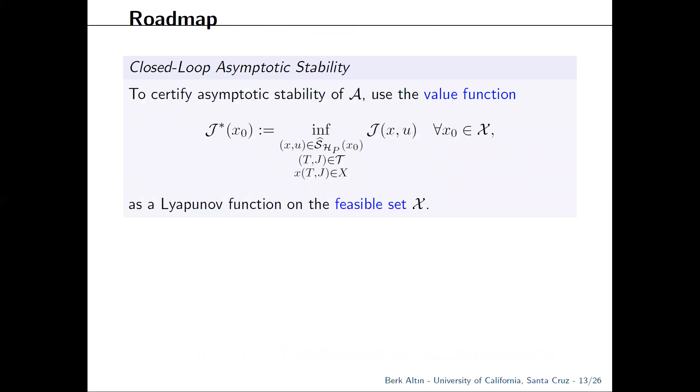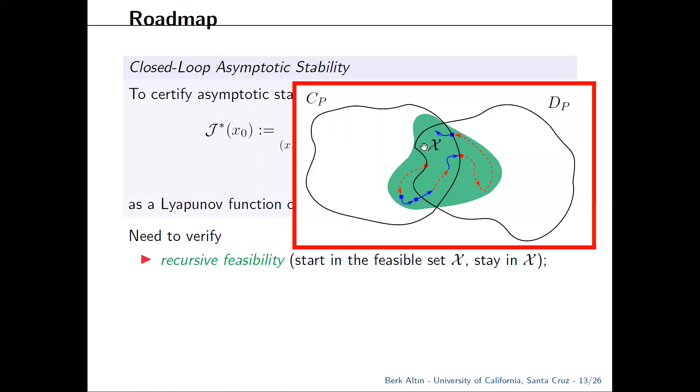Once you do that, you can certify stability under the MPC strategy using the value function, i.e. the smallest cost achievable from any initial condition. Here, this denotes the set of solution pairs with initial condition x_0. So to do that, you need to verify recursive feasibility, which means that if you move along the optimal trajectory and resample to solve the optimal control problem again, you should be able to do that.